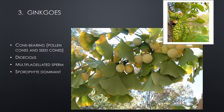Ginkgo trees are the third gymnosperm type — also cone-bearing and dioecious with separate male and female plants. They have beautiful fan-shaped leaves. In landscaping, only female plants are used because male plants produce a very strong unpleasant odor. Ginkgos also have multi-flagellated sperm and are sporophyte dominant. In Winston-Salem at Old Salem's God's Acre graveyard, there are extremely large ginkgo trees planted long ago.